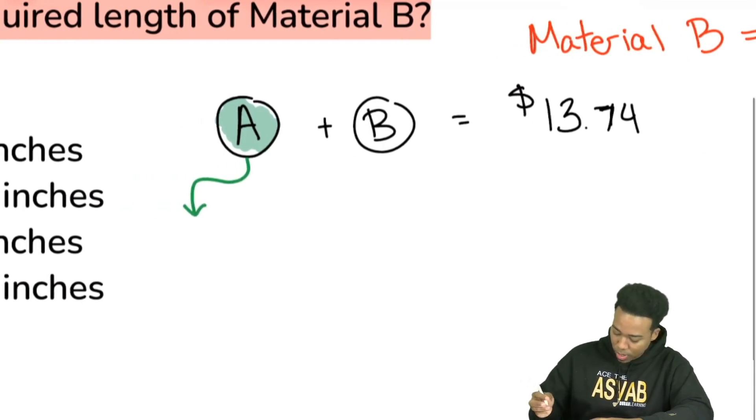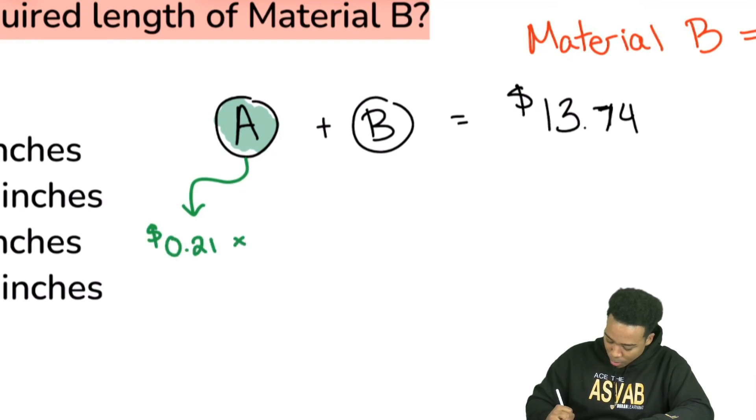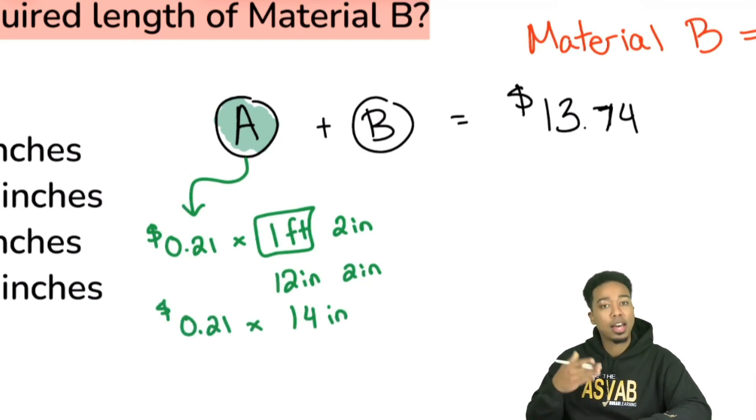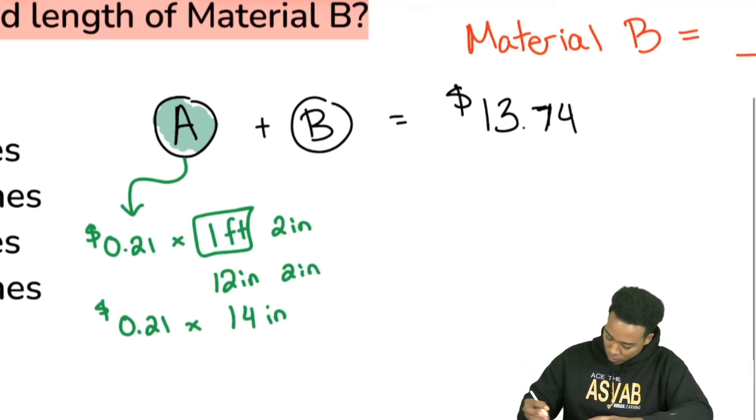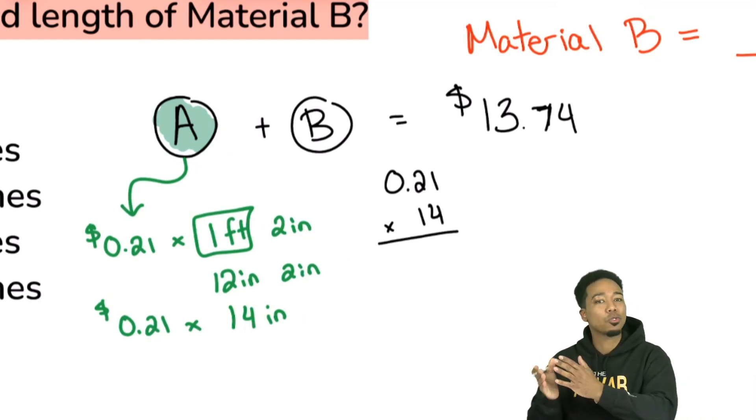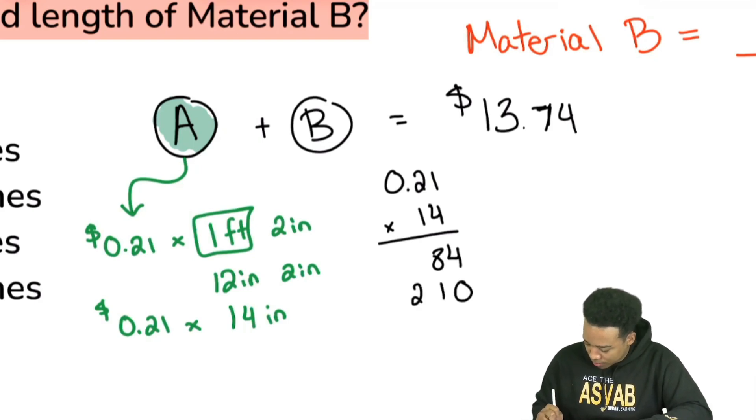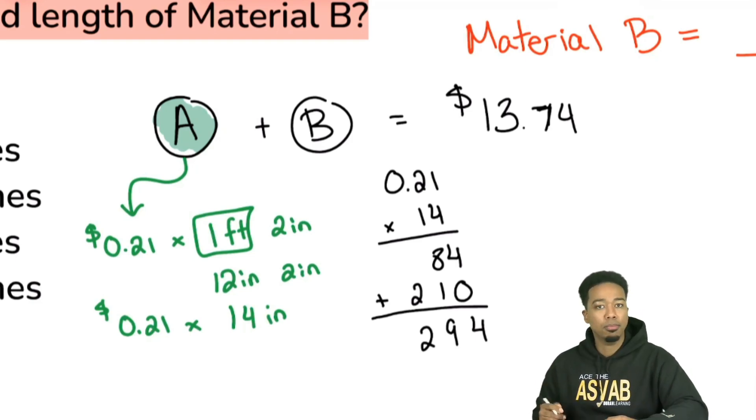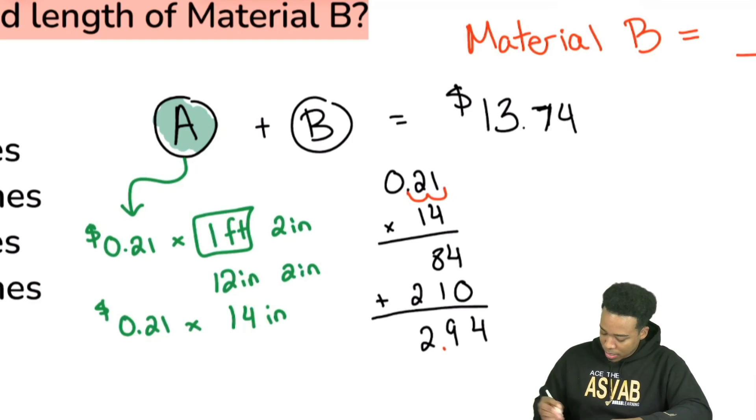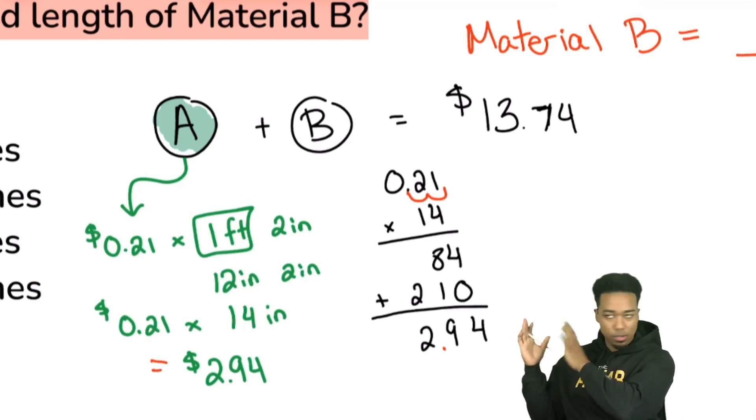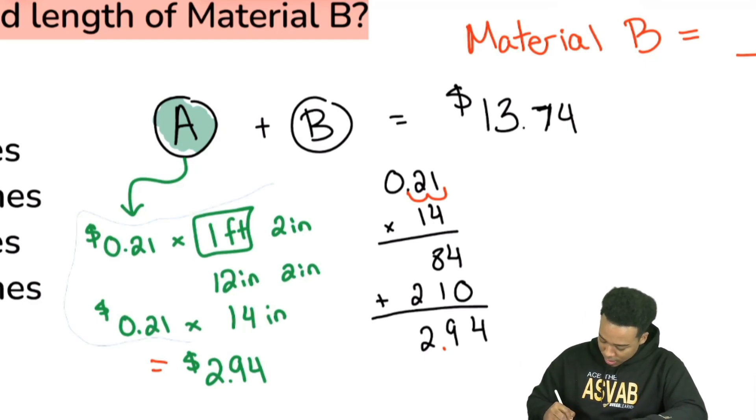One foot is 12 inches and we still have the two inches, so that's 14 inches. So we're really doing 21 cents multiplied by 14 inches. We'll proceed now and multiply. To multiply, what we're going to do is ignore the decimal and then bring it back at the end. So we have one times four, two times four. Then we'll go to the next row and we have one times one, two times one. Add these together. We get four, nine, and two. And then we bring the decimals back. So this equals a cost for material A of $2.94. Just like that. I'm going to erase it to keep the problem going.